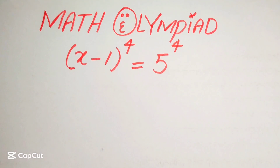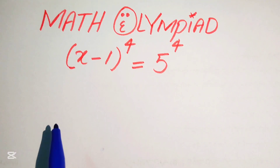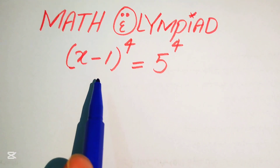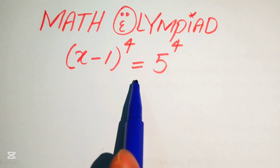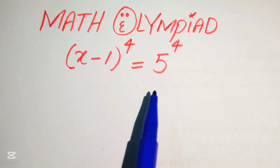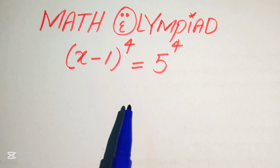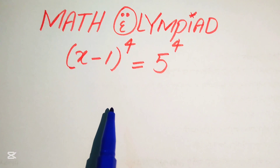Hello everyone, welcome to this nice math linear algebra problem. Here we have (x minus 1) to the power of 4 equals 5 to the power of 4, and we solve this problem for the values of x.